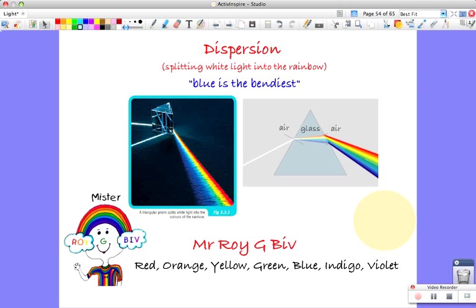If you need to remember the colors, remember Mr. Roy G. Biv: R for red, O for orange, Y for yellow, G for green, B for blue, I for indigo, and V for violet. These are the colors of the rainbow in that order.